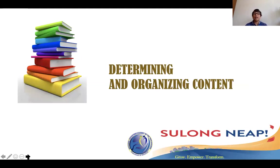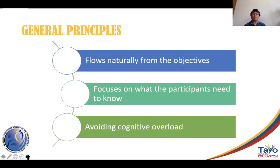Given the objectives, what is the content of the training? General principles for determining content include: first, content flows naturally from the objective, which tells you the scope of content required. Second, it should focus on what participants need to know — you must be strategic and not cover everything; you need to determine the 'must know' part. What we want to avoid in determining training content is cognitive overload — providing so much information that participants cannot handle it, which renders the training ineffective.